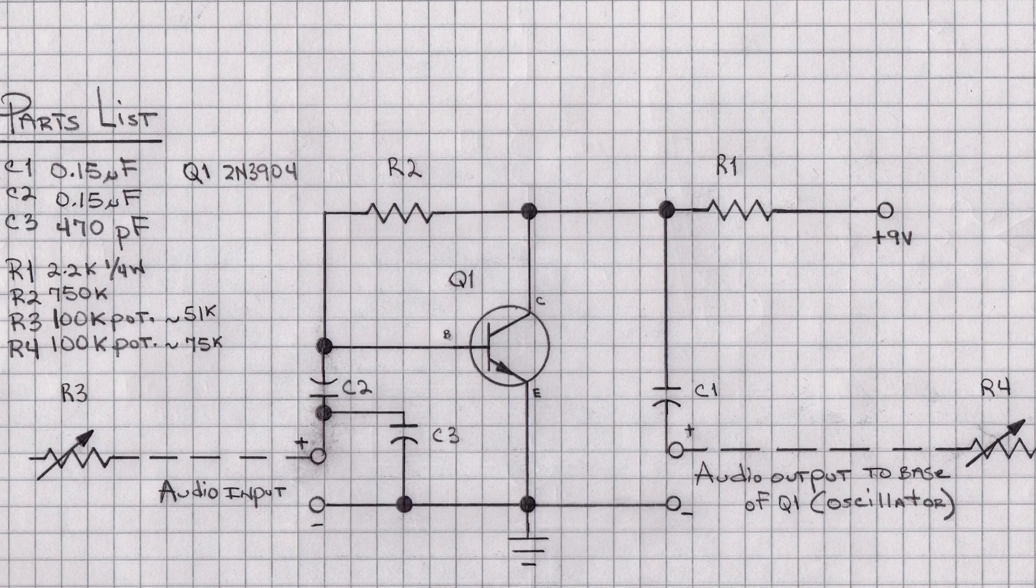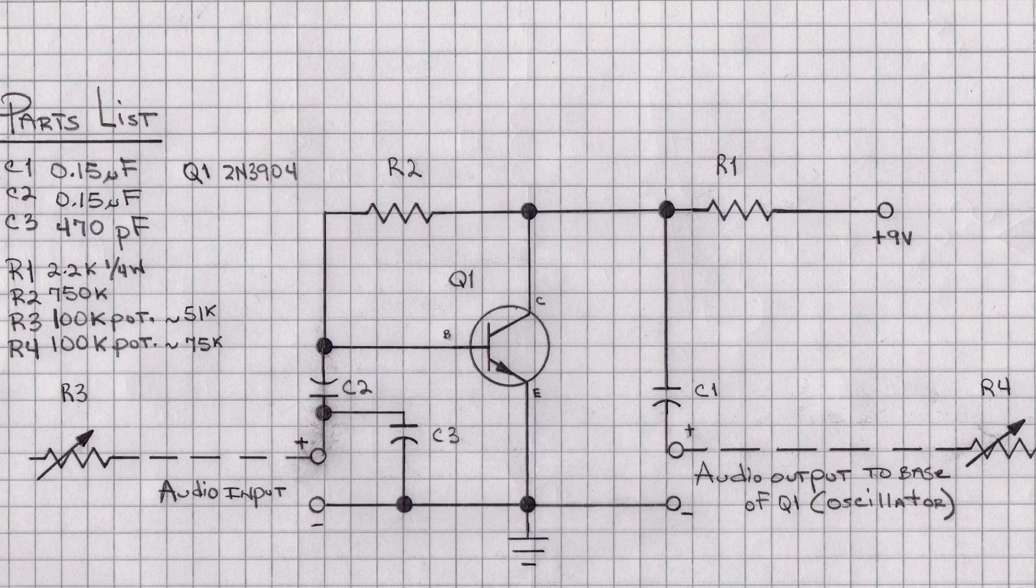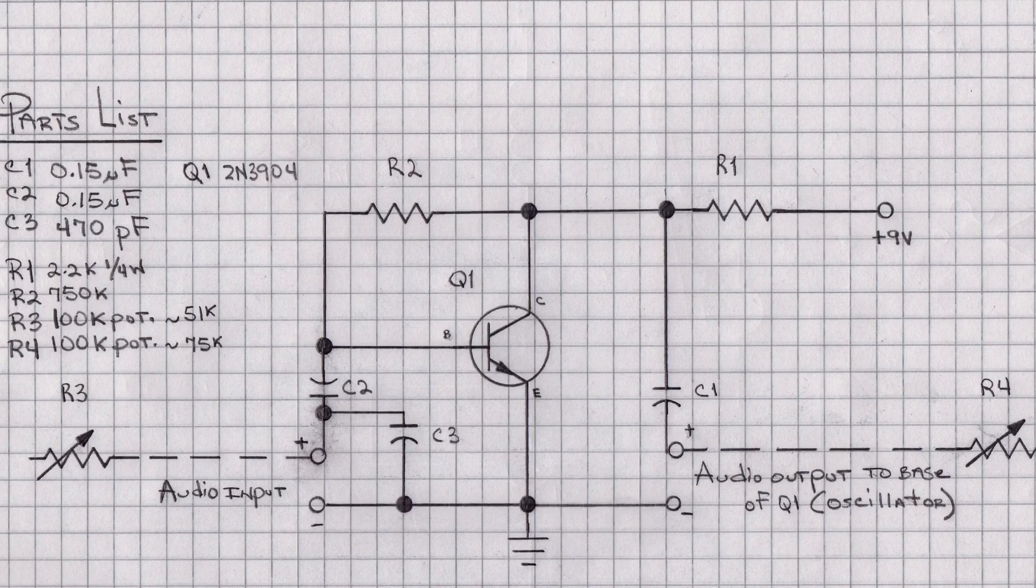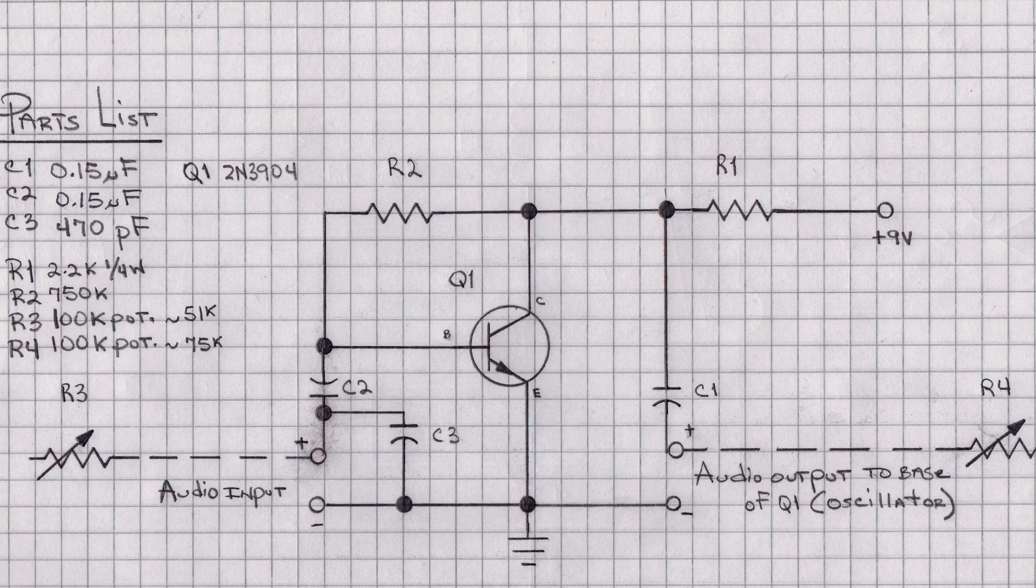Now a couple other things to note, you can see I've got R3 and R4 added, those would be optional. In my case, I ended up being a fixed resistor in one case and variable in the other, just to make sure I had some wiggle room for my audio input or audio output itself.